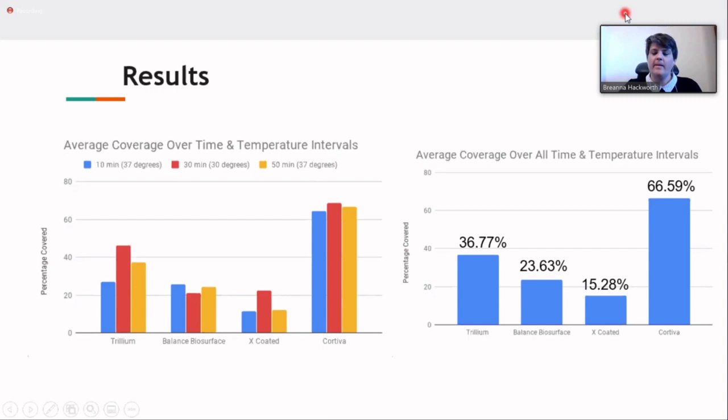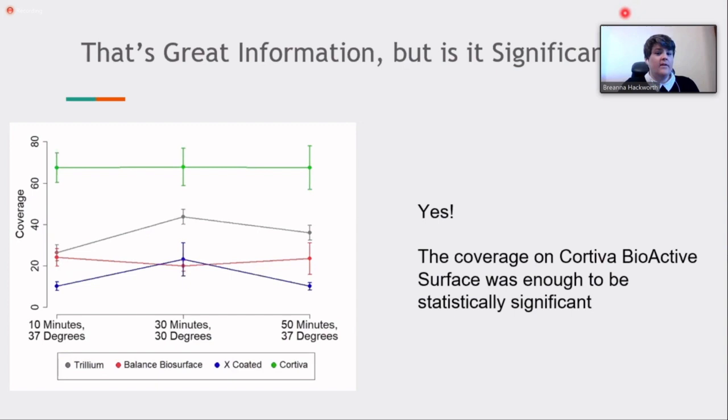This is really great information. But is it significant? And the answer is yes. We once again utilized our biostatistician at school. She gave us the chart on the left and a lot of other great information. As you can see in the green line here, this is the Cortiva, and that did have enough adhesion to be considered statistically different than the other coatings.